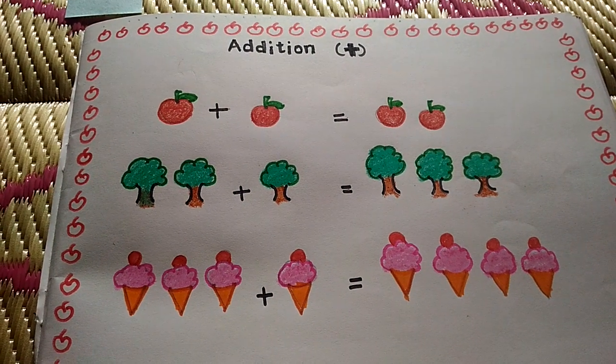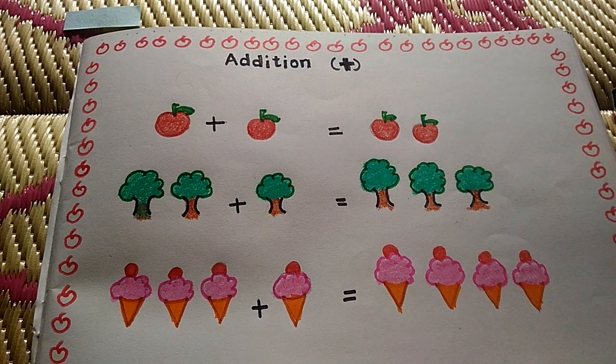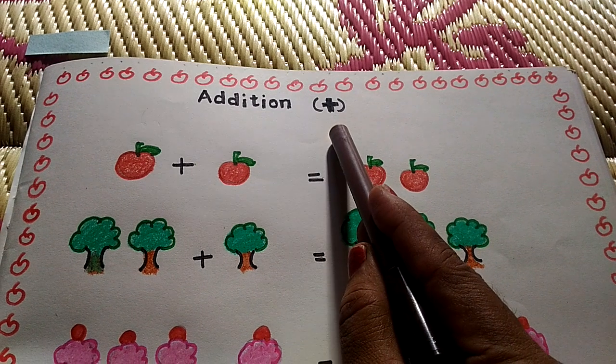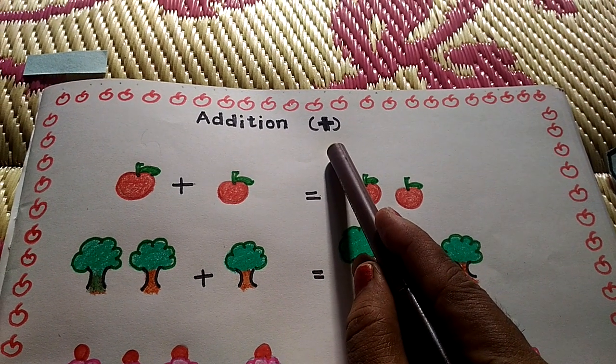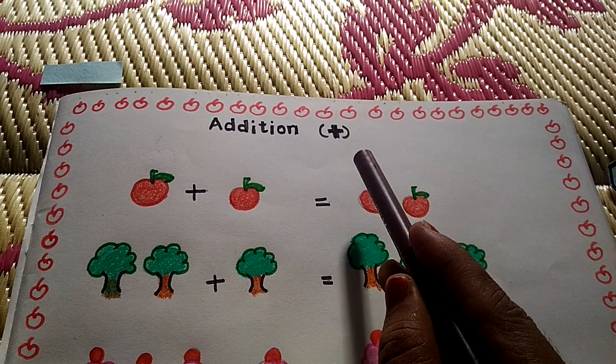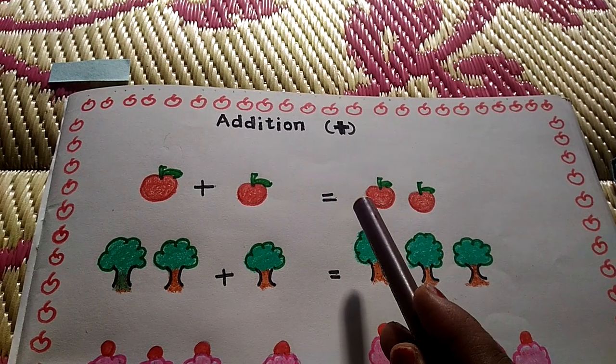Hi kids, Max Activity Sheet for UKG kids. Addition plus symbol. What symbol is this? Plus. Addition is taking two or more numbers and adding them together. That is called addition. It is the total sum of two or more.